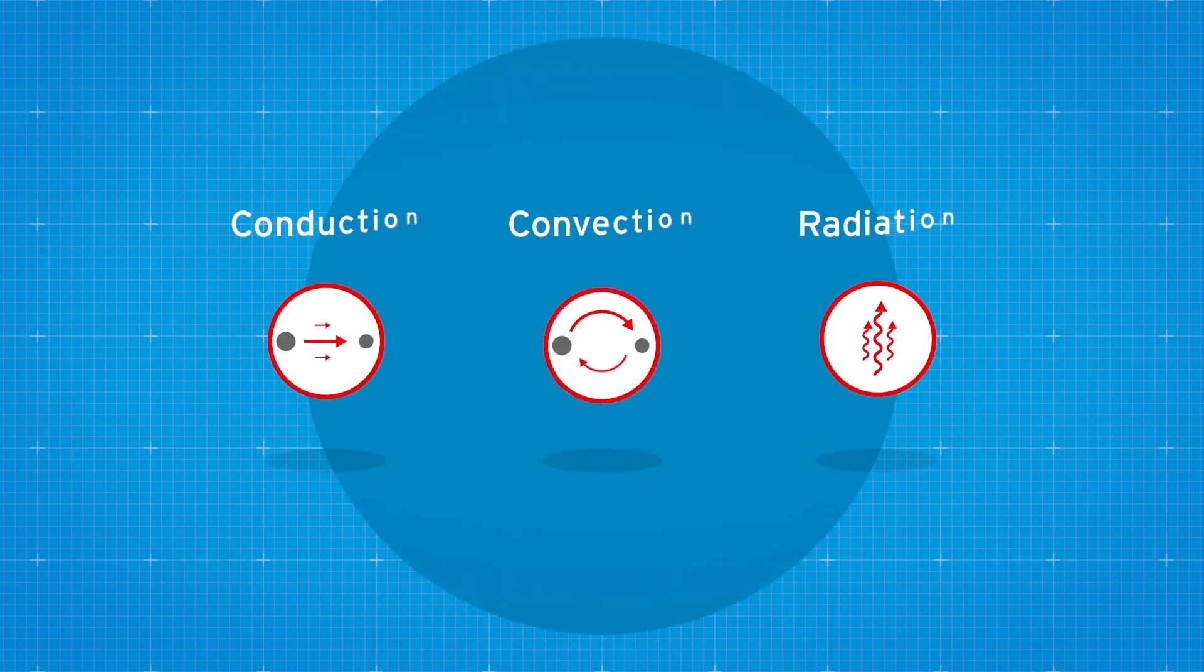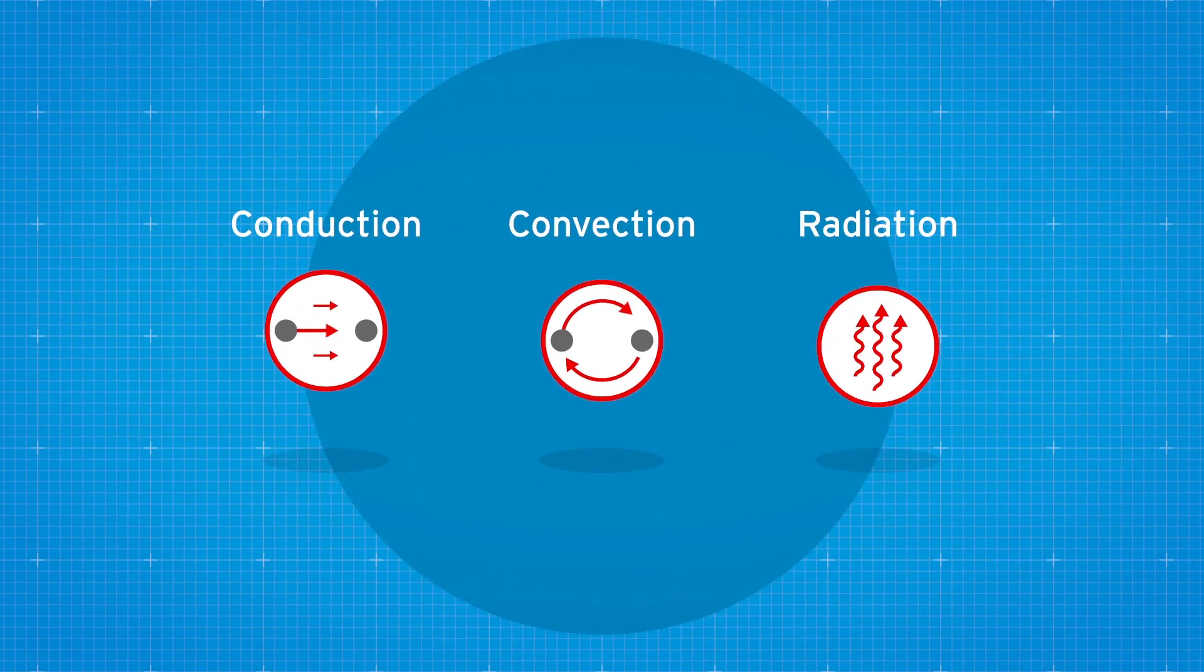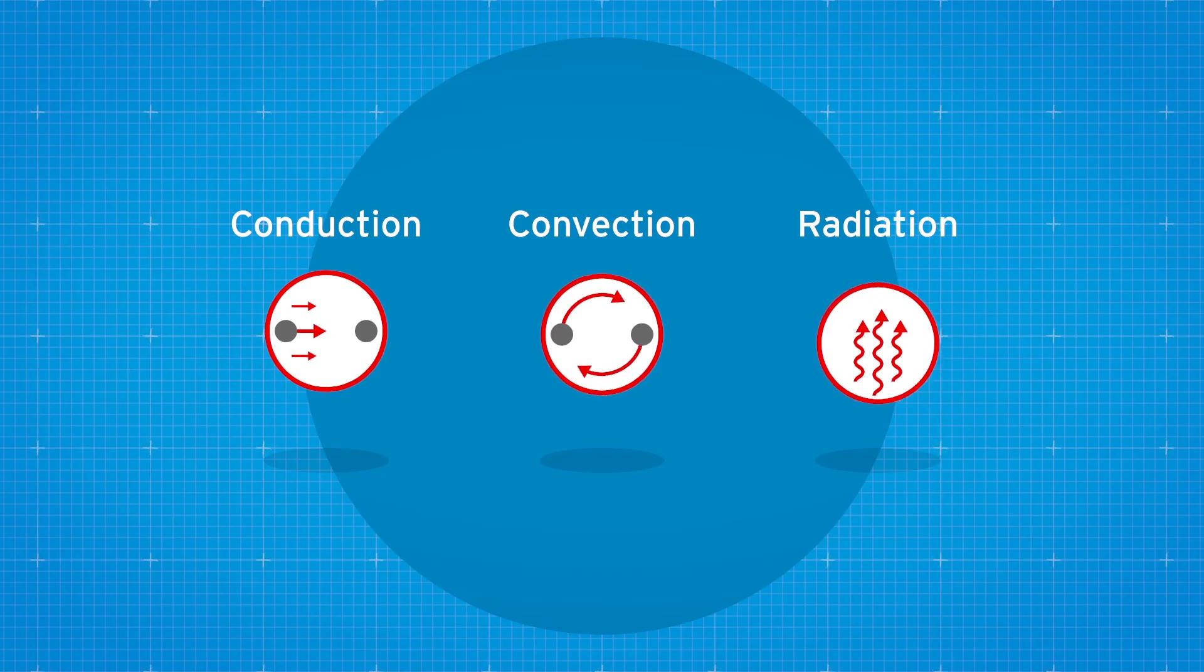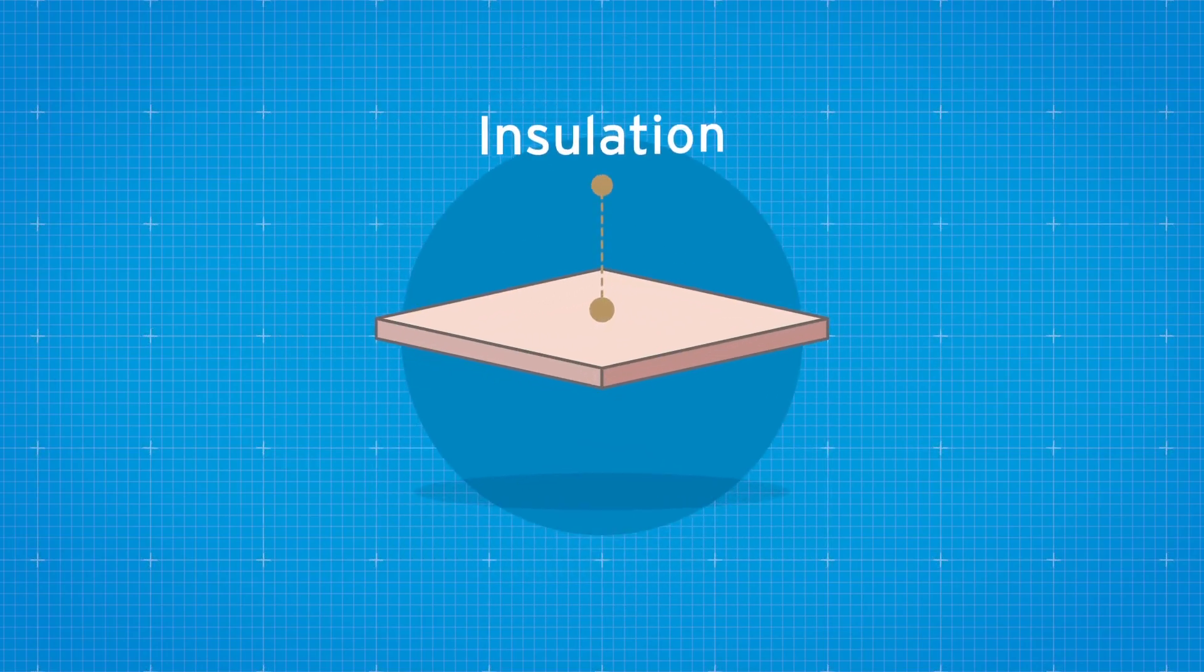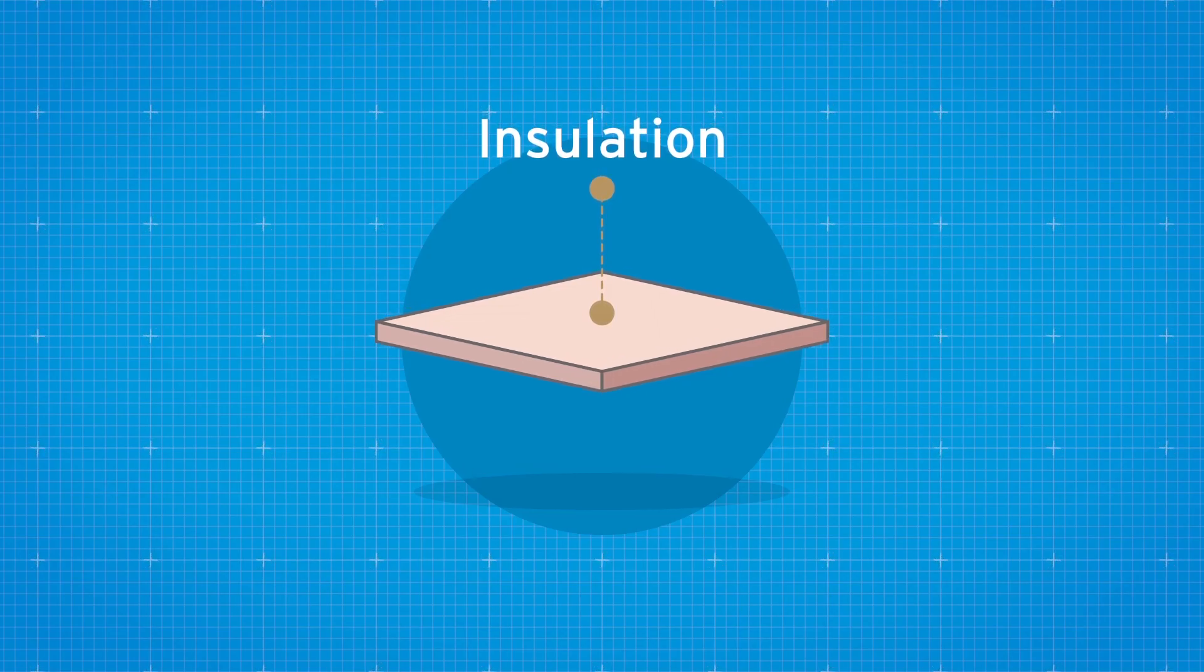To summarize, heat transfer can occur through conduction, convection, and radiation. Thermal insulation is designed to restrict this, in turn reducing the amount of heat lost or gained.